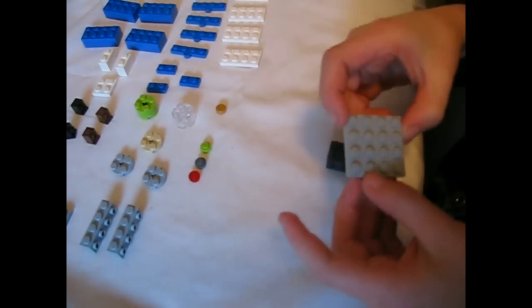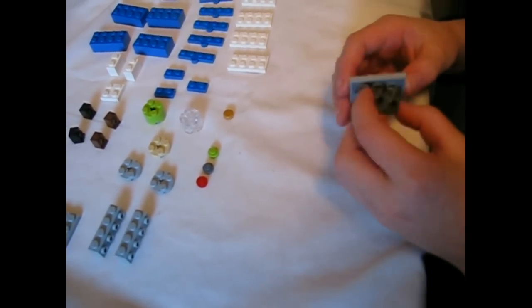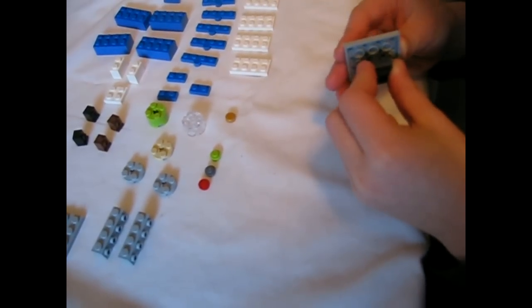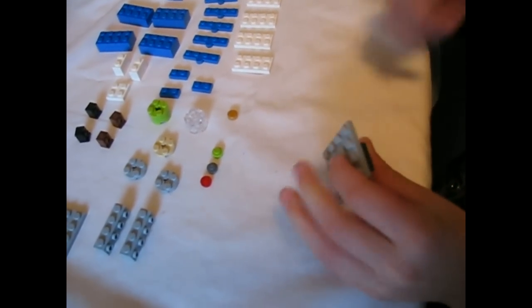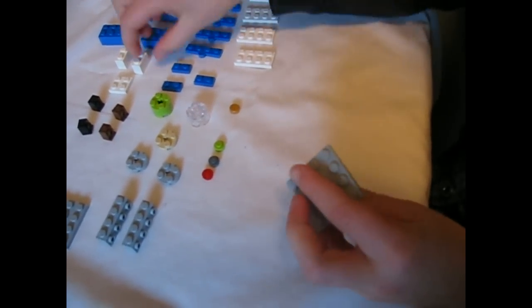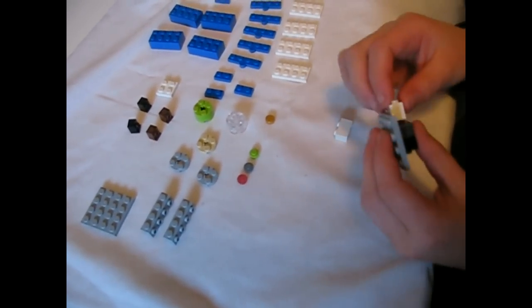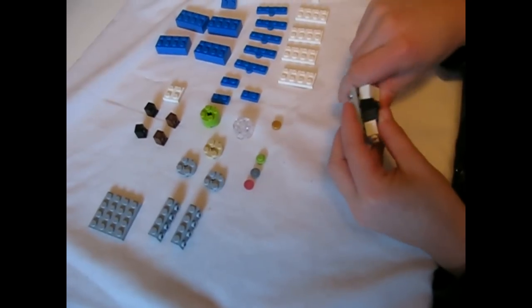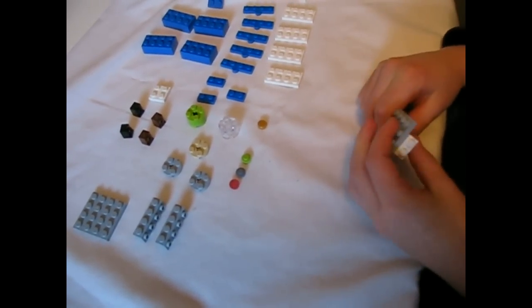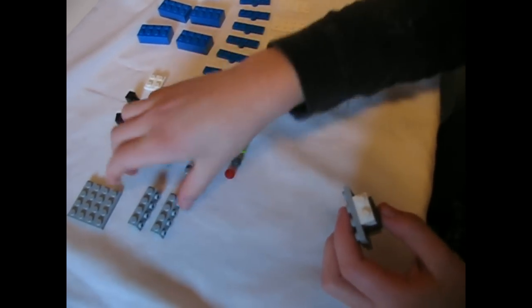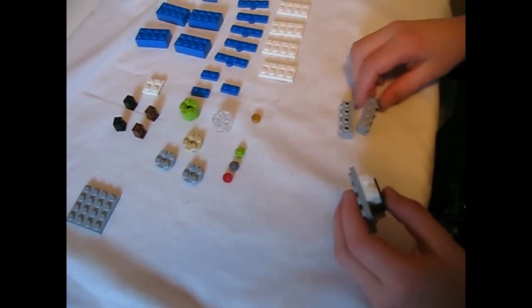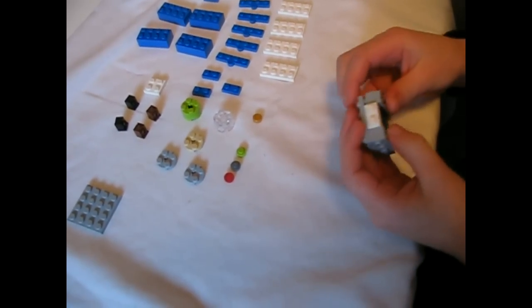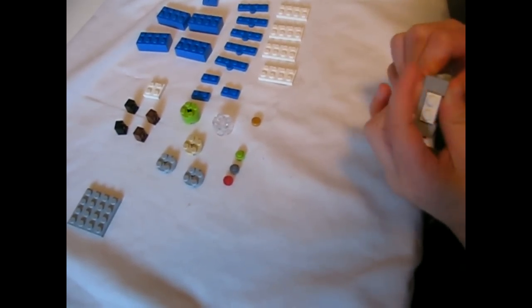Then you get a square piece like this. Stick all these four in the middle. Then you get two blocks like these, put them on the studs over here and over here. Then you get these two blocks and stick them right on the sides.